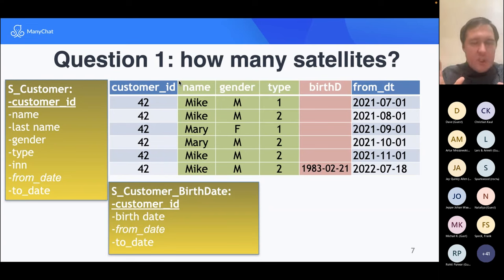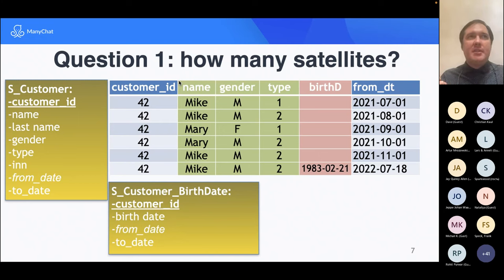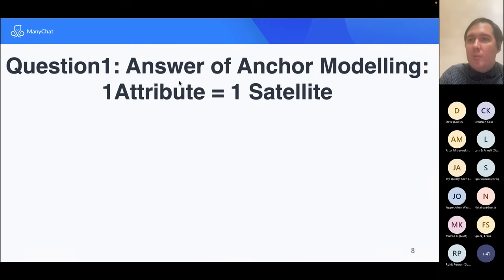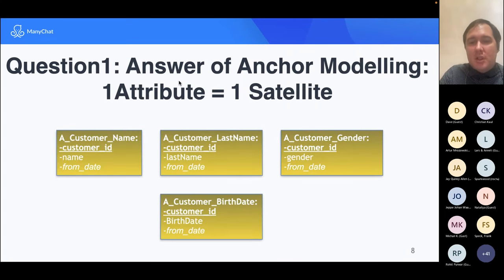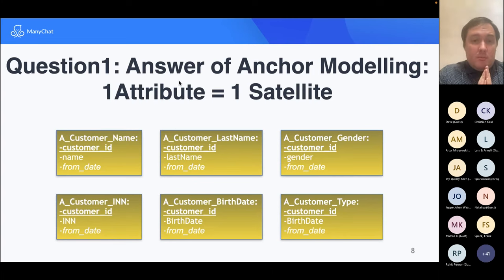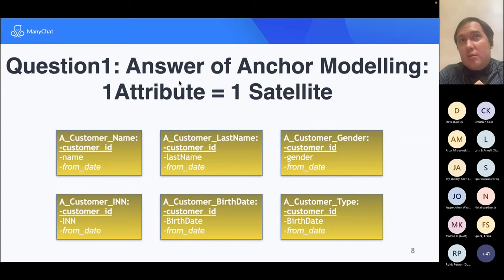So that was Question 1: how many satellites. I hope I've given you the feeling this is a complex question requiring real thought. What answer can we get from other methodologies? What does Anchor Modeling say? The answer is super simple: one attribute per satellite — each attribute in its own satellite. If we have a customer with six possible attributes, we create six separate satellites.